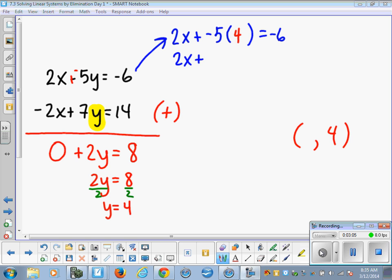So 2x plus negative 20 is equal to negative 6. It takes a little second to solve this one, so be patient and see the steps through. Okay, so just finishing up solving this equation, you get 2x is equal to 14, and then divide quickly by 2, and you get x equals 7. Okay, so there you have your complete answer, 7, 4. And look how little work that was compared to what it would have been for substitution.